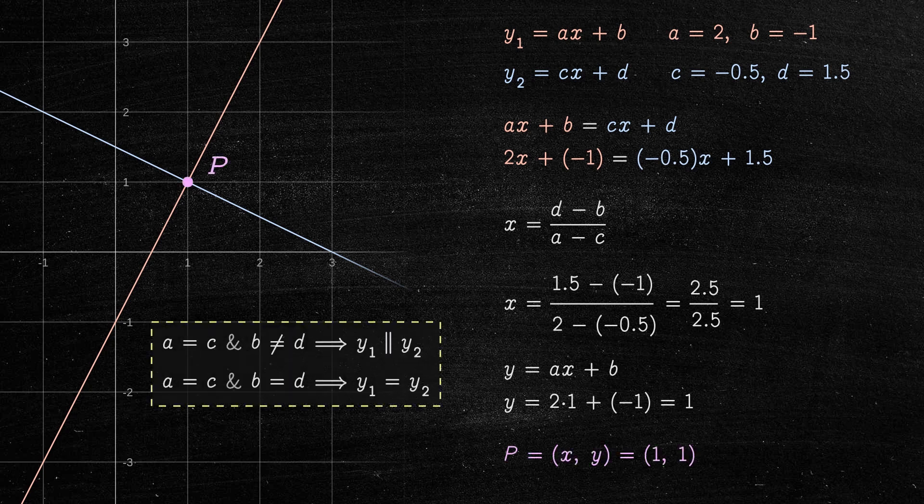Naturally, if A and C are equal, then the two lines are parallel, and there is no intersection point. The only disadvantage of this method is that the lines must be non-vertical.